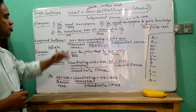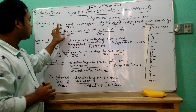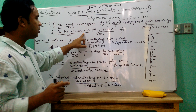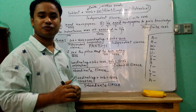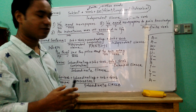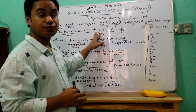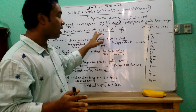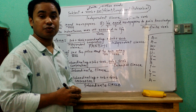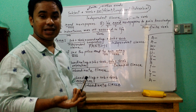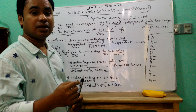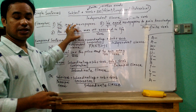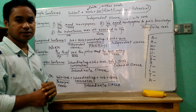Example number three: 'An industrious man will succeed.' This is a simple sentence. 'An industrious man' is the subject and 'will succeed' is the finite verb. How is it a finite verb? This is in the future simple tense. In the future simple tense, we use 'shall' or 'will' as an auxiliary verb followed by the base form of the main verb. So this is also a simple sentence.